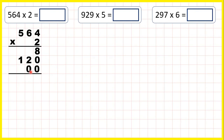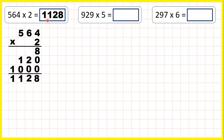We can move on to our third answer line, but here we're going to need two zeros because we're next going to multiply by this five in our hundreds. Because it's in our hundreds, we need zeros in our tens and our ones. Now five times two is ten, so the last step is just to add up our answer lines, and we get one thousand one hundred and twenty-eight.